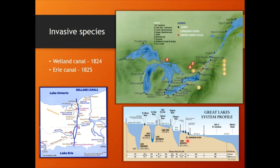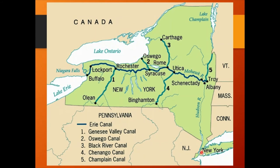A year later the Erie Canal connected the Hudson River in New York all the way over to Lake Erie. Right there, a lot of fish came from Lake Ontario and the Atlantic Ocean — diadromous fish that can handle different salt tolerances — and started making their way into first Lake Erie, then Huron, and so forth. This is a picture of the Erie Canal, where the Hudson River was connected by canal all the way to Lake Erie, so ships could take a shortcut rather than going through Canada.